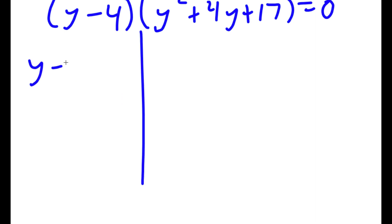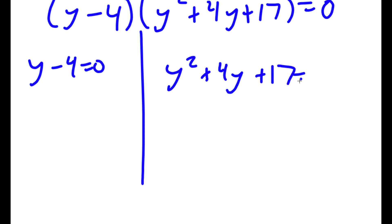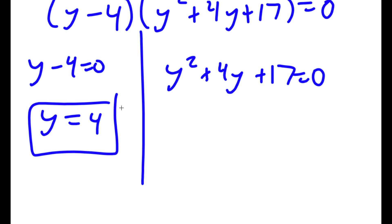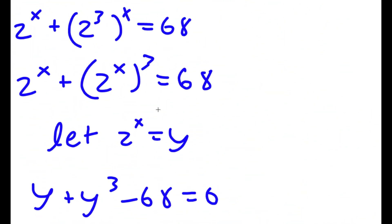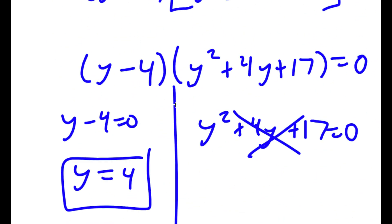This gives me two equations: y minus 4 equals 0, and y squared plus 4y plus 17 equals 0. For y minus 4 equals 0, y is obviously equal to 4. For y squared plus 4y plus 17 equals 0, using the quadratic formula you get the square root of a negative number, so there is no real solution. Therefore y equals 4 is the only solution.